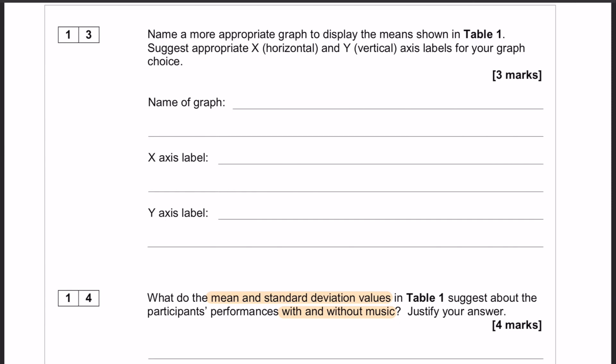As was the case in the last video, questions 13 and 14 are both fairly short, so I'm going to do both of them in this video to keep it nice and brief. Question number 13 is: name a more appropriate graph to display the means shown in table 1, and suggest appropriate X and Y axes for your graph of choice. Question number 14 is: what do the mean and standard deviation values in table 1 suggest about participant performances with and without music, and justify your answer.